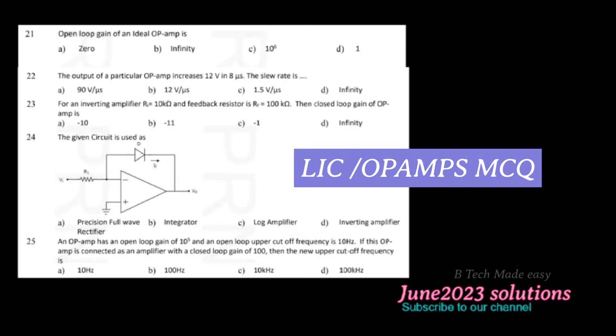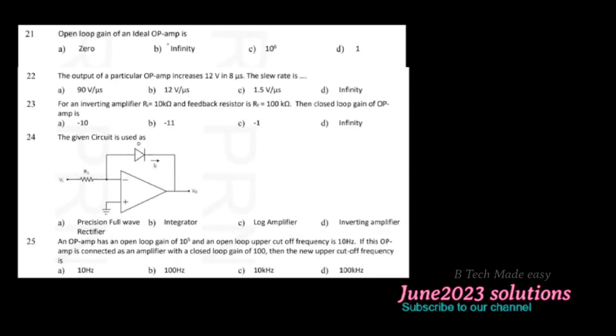First question: the open loop gain of an ideal op-amp is? The open loop gain of an ideal op-amp is infinity.